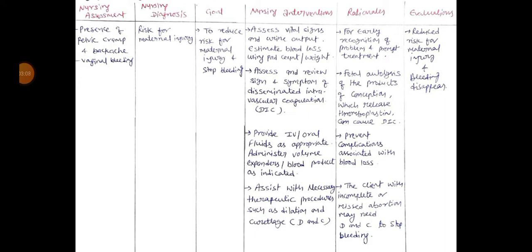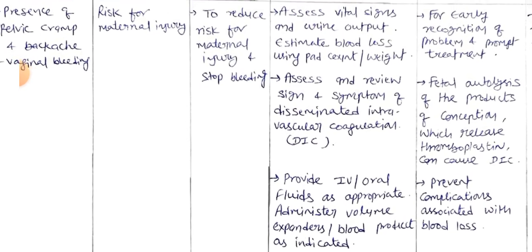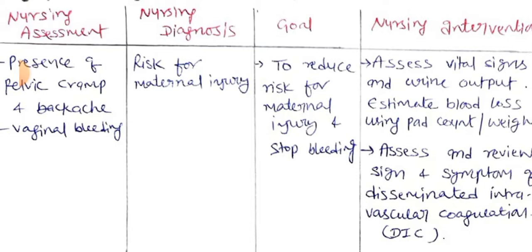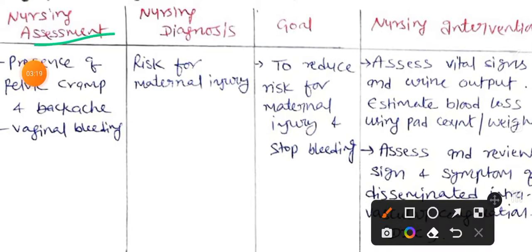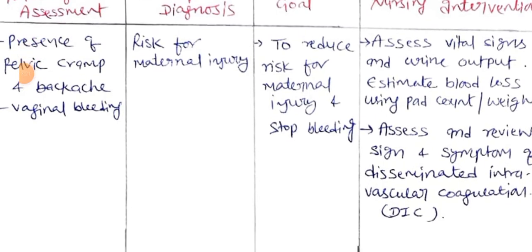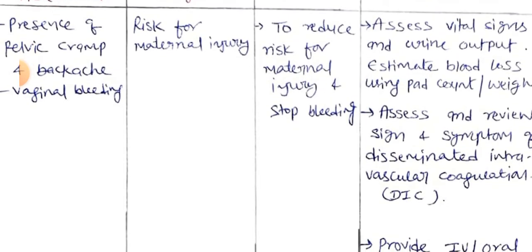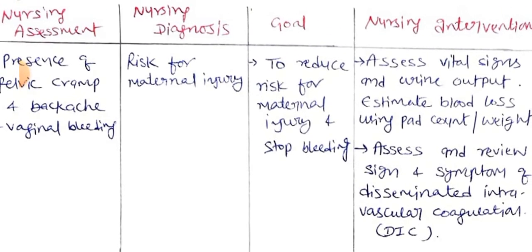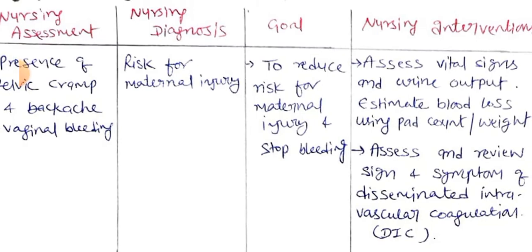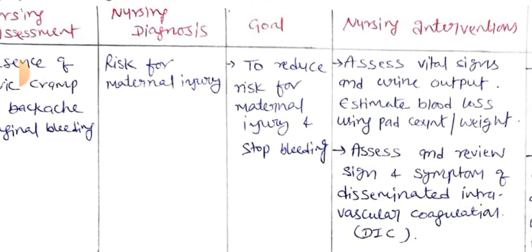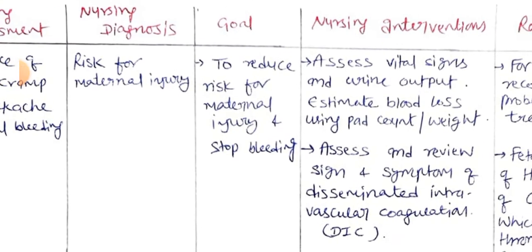Here is the first nursing diagnosis of the nursing care plan of abortion. First, we take the nursing assessment, which includes the presence of pelvic cramping, backache, and vaginal bleeding. Based on this assessment, the nursing diagnosis is: risk for maternal injury after abortion.